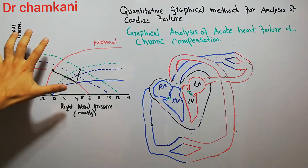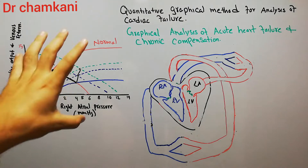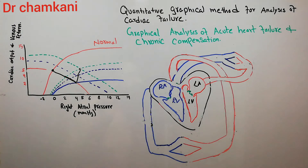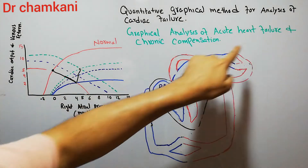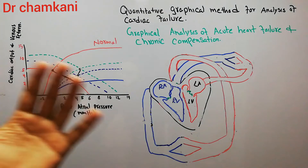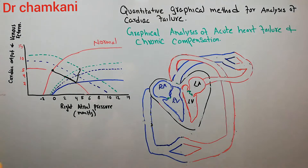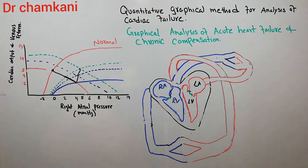Here is an example of one graph through which we are going to explain cardiac failure using the graphical method. The first thing we are going to explain is the graphical analysis of acute heart failure and chronic compensation. After that, we will also discuss the analysis of heart failure without compensation.